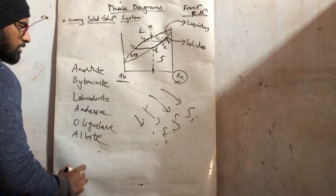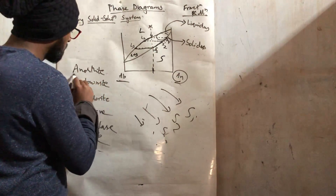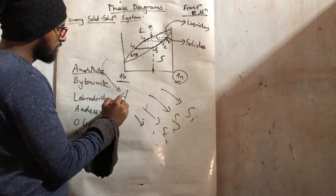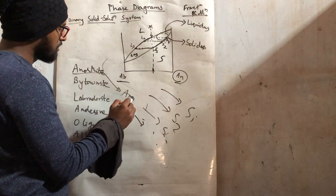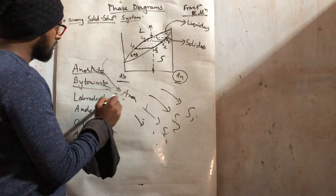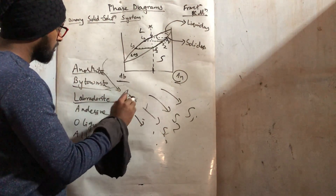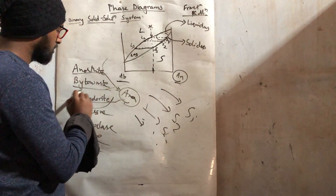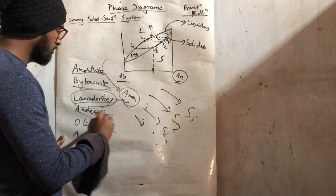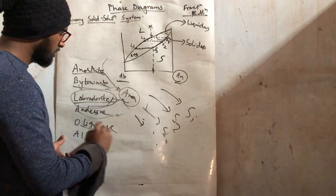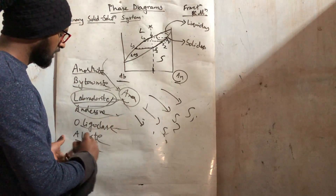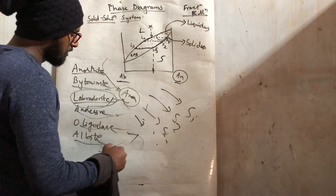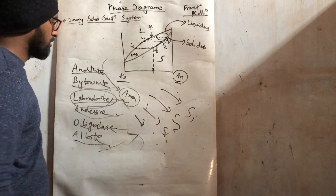This is the total plagioclase series. First we will get anorthite individually, which will produce anorthosite. Then bytownite, then labradorite — anorthosite is mostly composed of labradorite. Then we will get andesine, then oligoclase and albite. These will be the final solids produced by fractional crystallization.